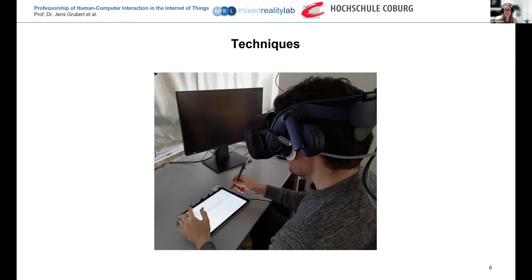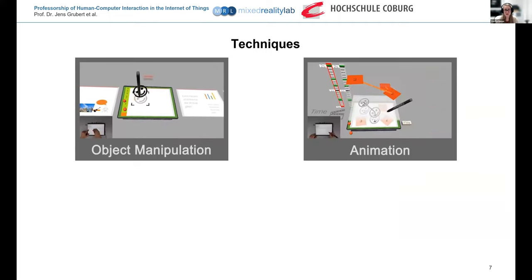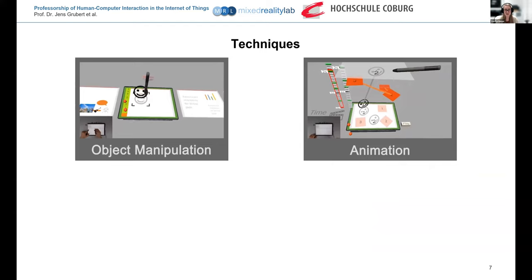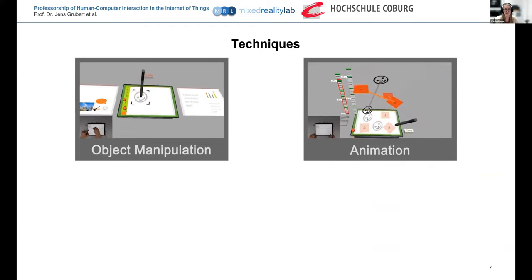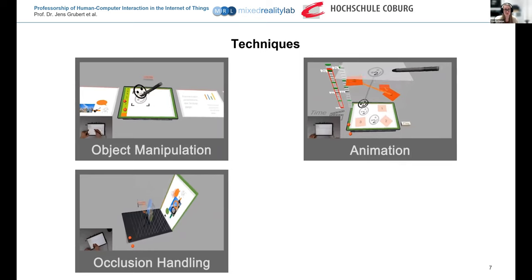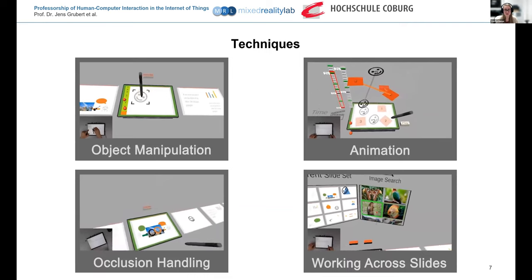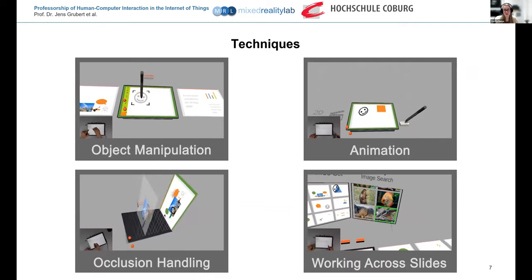We designed a set of interaction and visualization techniques exploiting the advantages VR provides — large display space, depth display, and mid-air interactions. Our four techniques are: the object manipulation technique, which allows users to manipulate objects in 3D using the spatially tracked pen; the animation technique, which allows creating and editing animations while time is represented in the third dimension above the tablet; the occlusion handling technique, which displays several layers of an object slightly separated using 3D visualization; and working across slides, which uses the large output space to display more information assessed via eye tracking and touch.